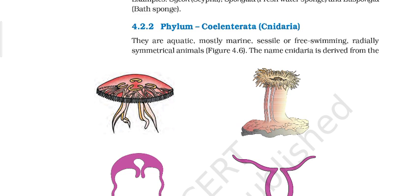Cnidarians may be sessile or free-living. They exhibit tissue level of organization in their body. They are acoelomate and radially symmetrical.